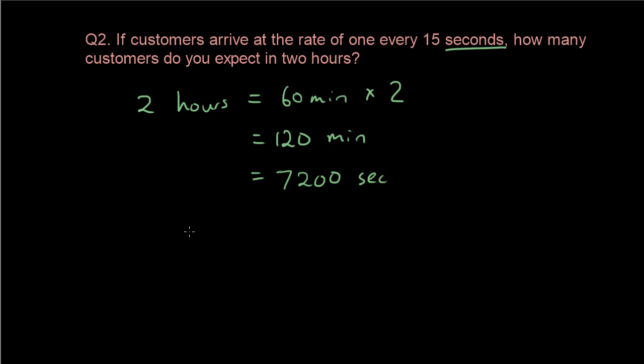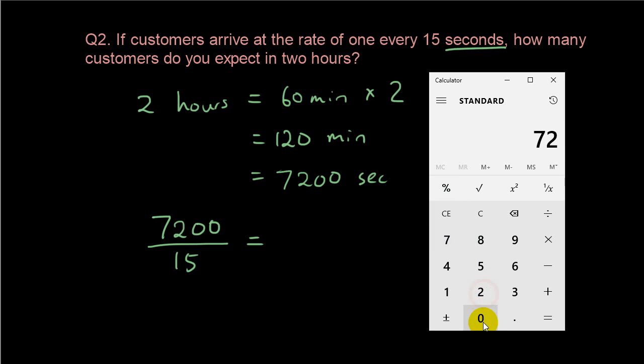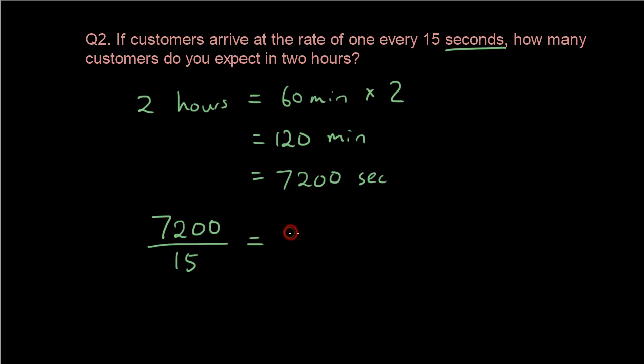So 7200 seconds. We have 15 seconds for one customer, so divide that by 15, and the answer is 7200 divided by 15, which equals 480. So 480 customers, because it takes 15 seconds for one customer and there are 7200 seconds.